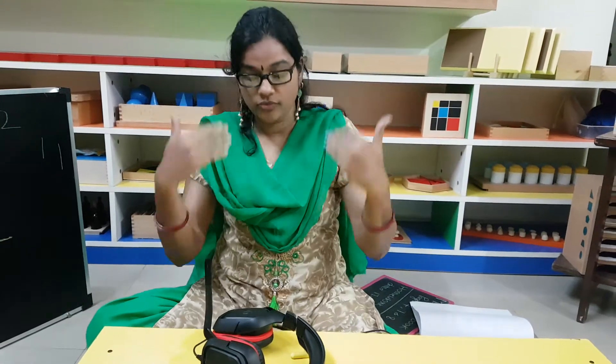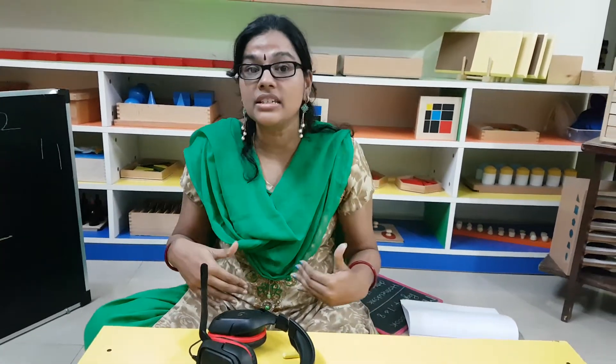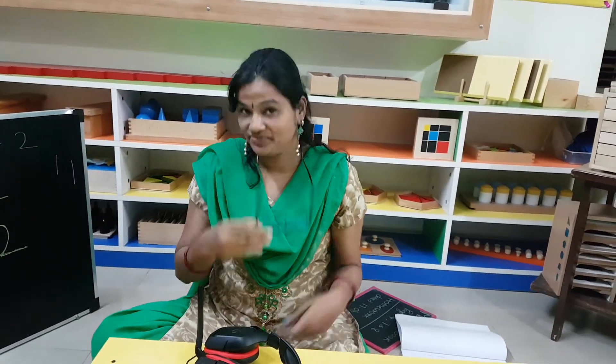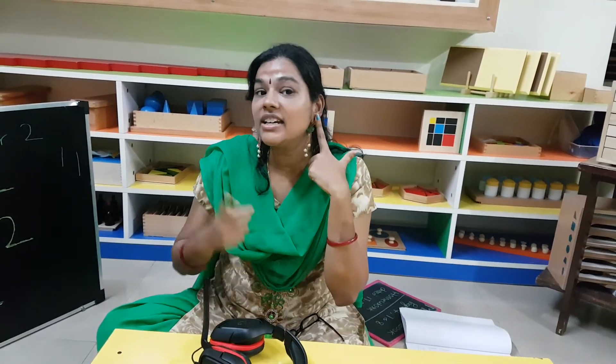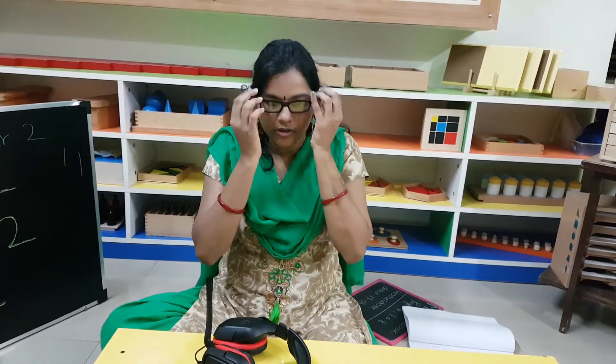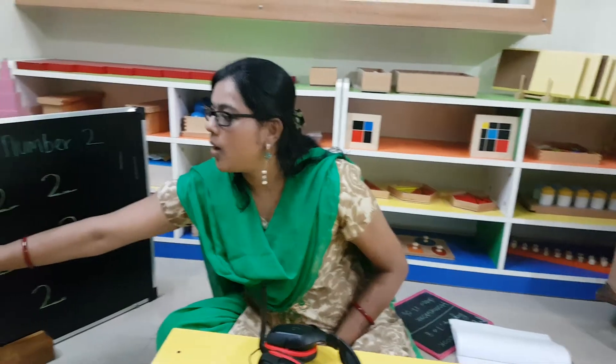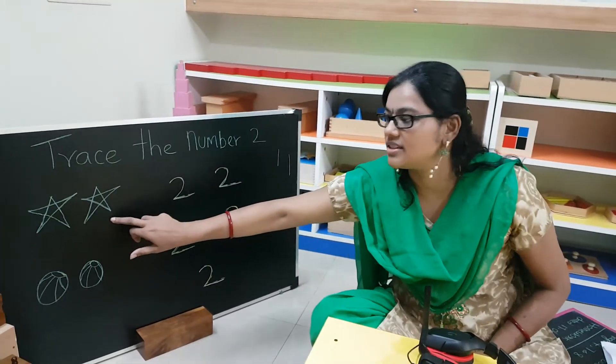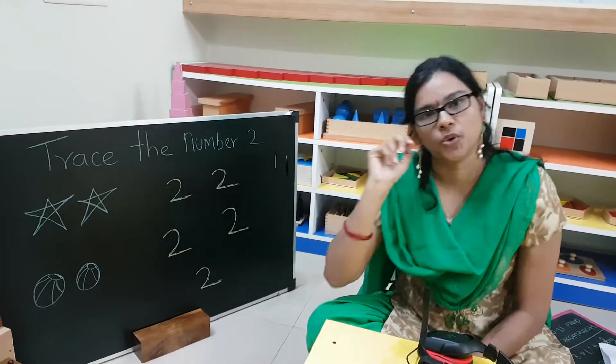Why don't we count within ourselves first? I will start with my hand. This is number 1. This is 1. This is 1. This is 2. My eyes? 1, 2. My ears? 1, 2. So keep counting — 1 and 2. 1, 2. This is number 2.